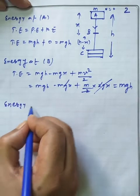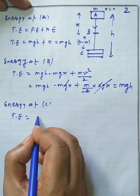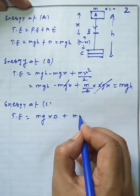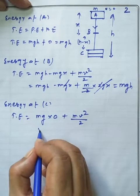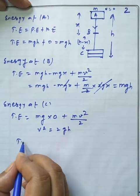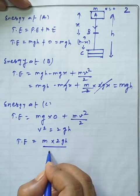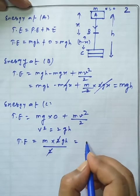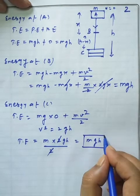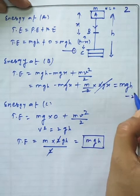Energy at point C: total energy equals potential energy plus kinetic energy. Potential energy Mg × H equals zero at ground, plus kinetic energy equals half Mv². Since the object has fallen from A to C, we replace v² with 2gH, the twos cancel, and we again get MgH. By these three equations — equation 1, equation 2, and equation 3 — the total energy of a freely falling object is always conserved.